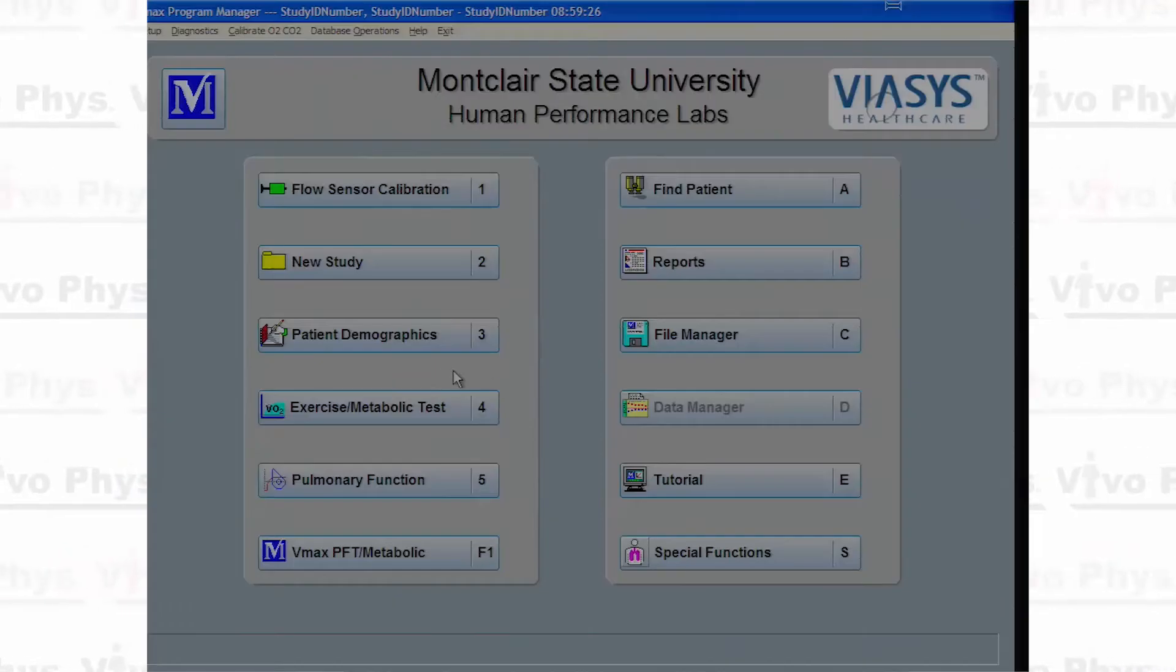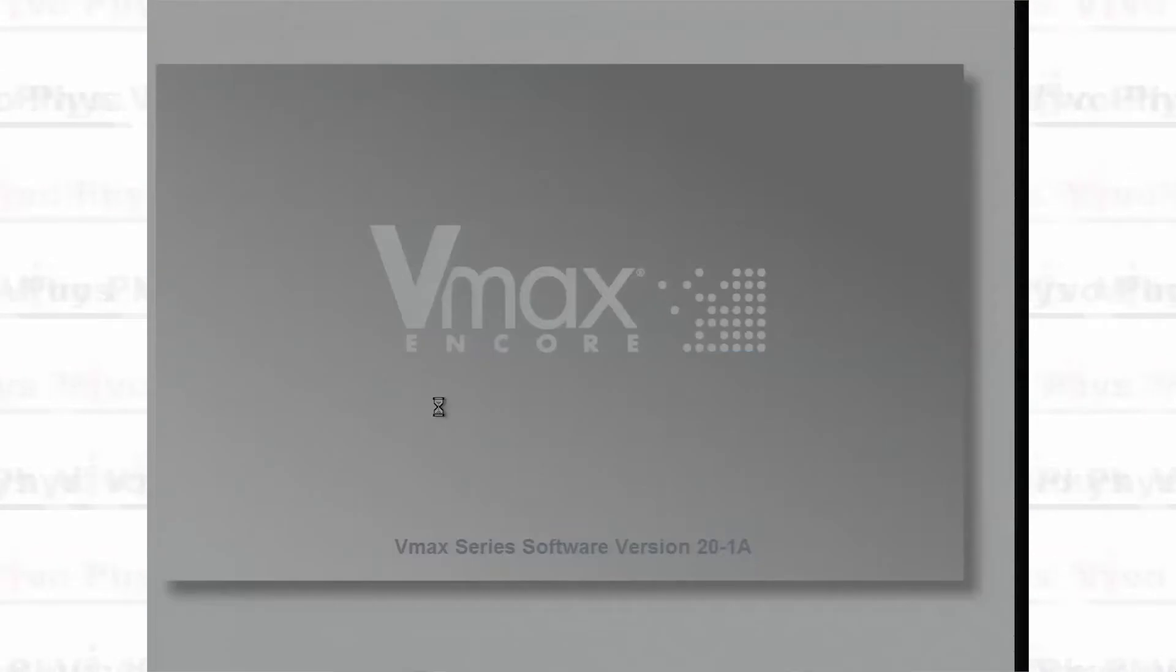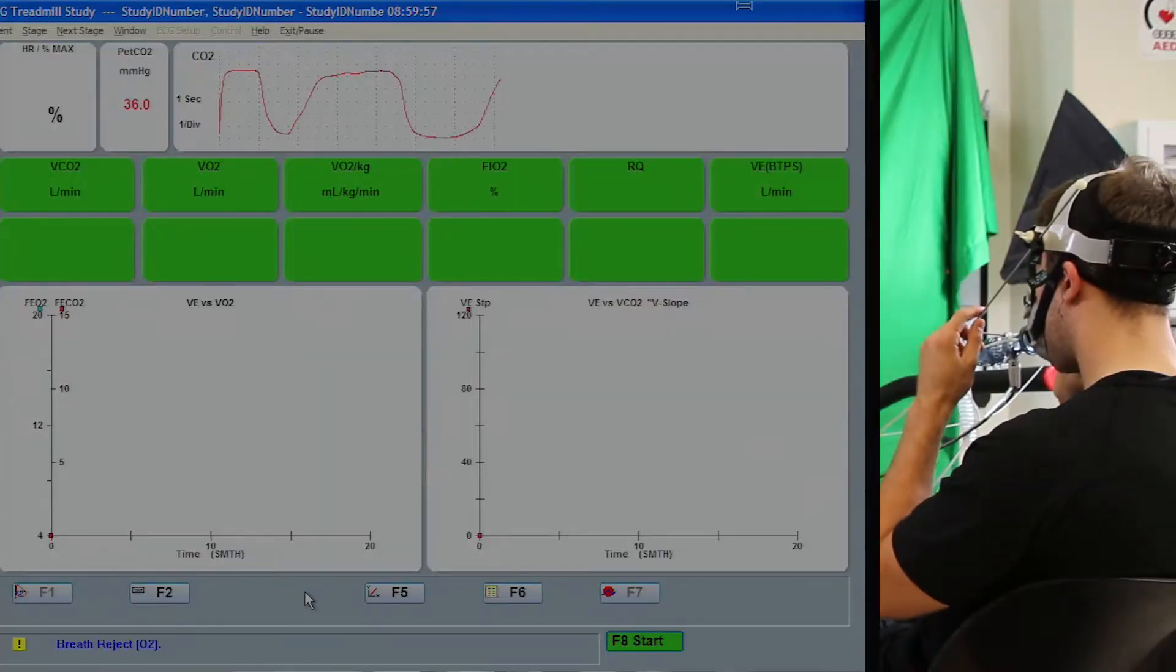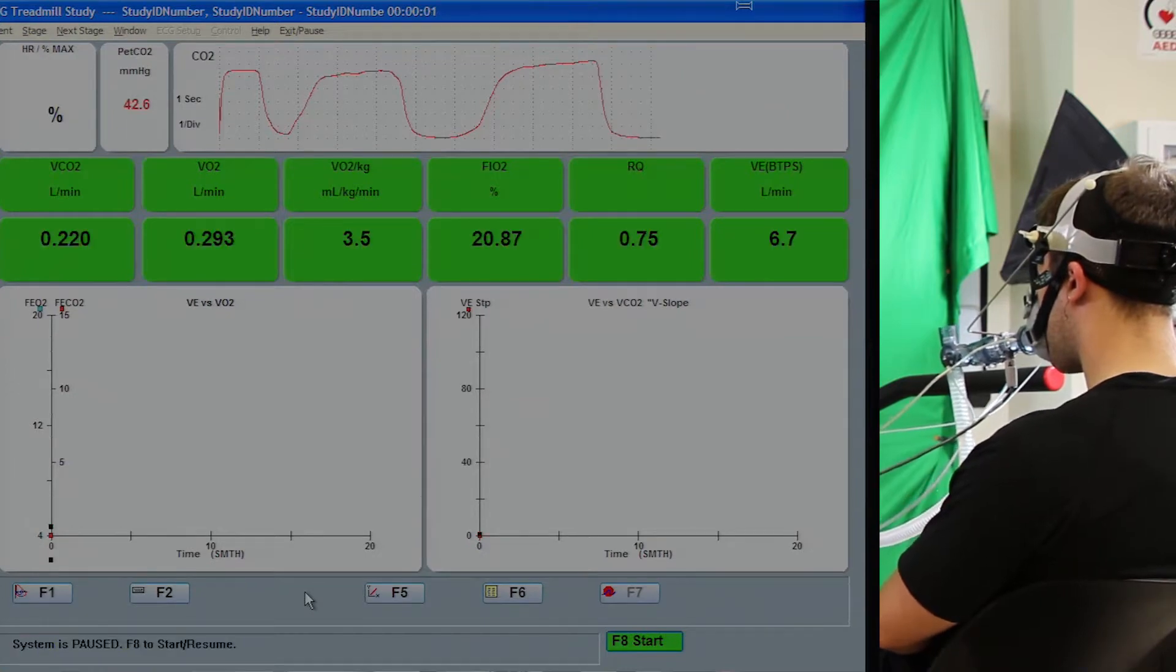With the participant's information entered, go and click on the exercise metabolic test and it's going to pop something up. Click start test. From that menu, hover across the bottom of the screen over those buttons and look for the one that says exit and begin test. The screen will show you the different parameters that are going to be measured during the test.